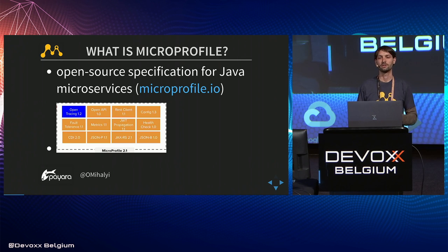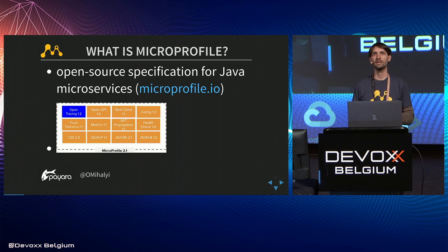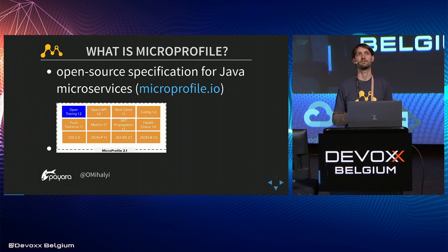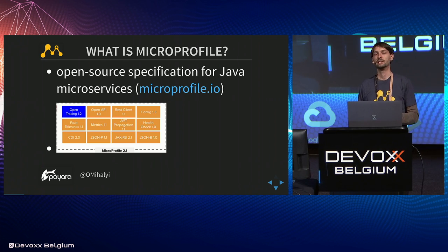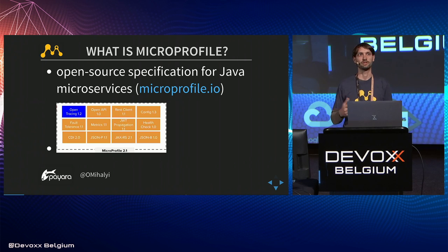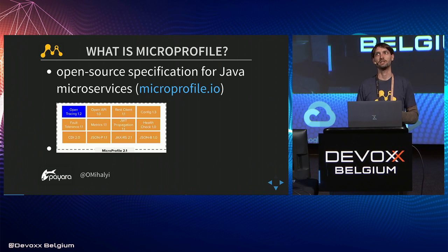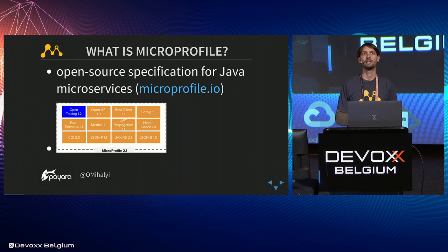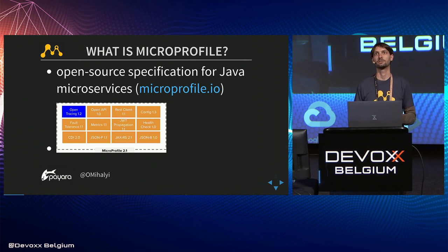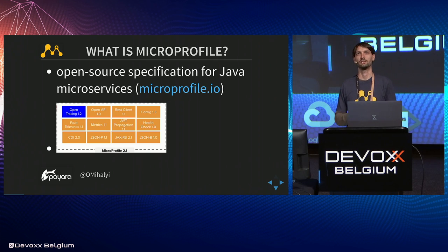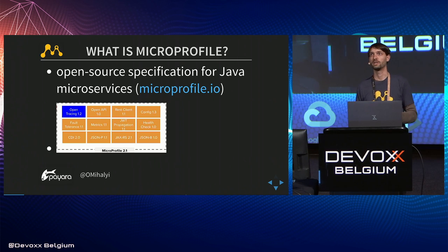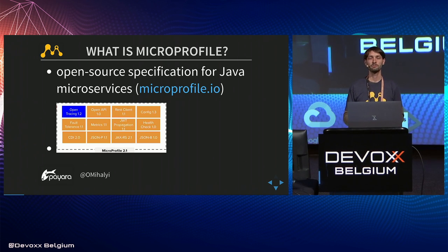MicroProfile started as an initiative of people who stood behind Java EE. It has a Java EE background, and vendors and people were contributing to Java EE at the time when Java EE was moving fast. They created a new project to collaborate on APIs and eventually contribute them back to Java EE. Java EE was donated by Oracle to the Eclipse Foundation and renamed to Jakarta EE, and now we are waiting for all this contribution to finalize. We all hope we can progress with Jakarta EE APIs very fast, unlike the old Java EE standards. But meanwhile, we already have MicroProfile.